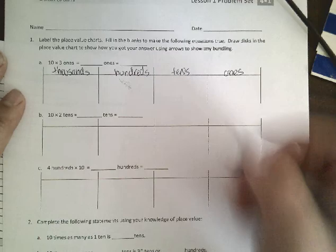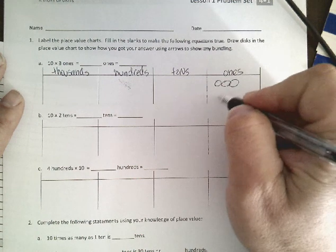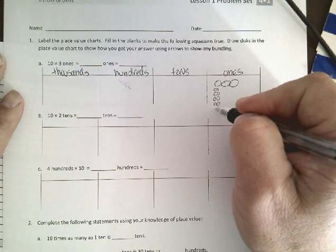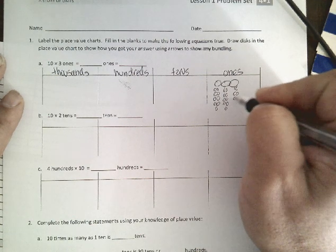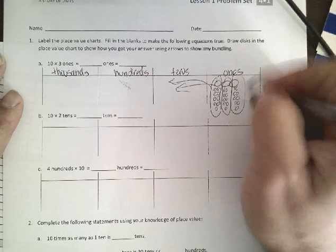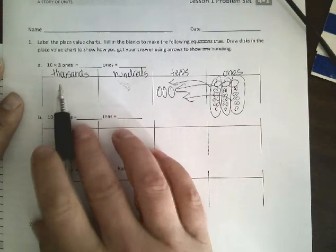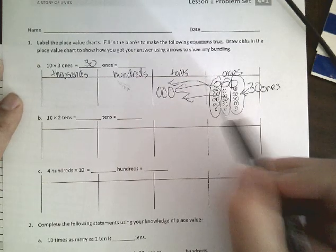So if we have right here 10 times 3 ones, if we have 3 ones and we're going to multiply those by 10, then we're going to actually have groups. We're going to have 10 of each of the ones that we have, demonstrating that this is now a group of 10, this is now a group of 10, and this is now a group of 10, so we would actually have 3 tens. What it states up here, the answer, 3 times 3 ones is 30 ones because there's 30 ones right here, but when we group those into groups of 10, we actually have 3 tens.